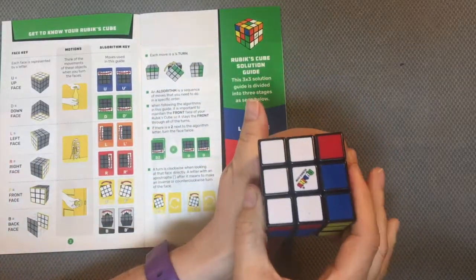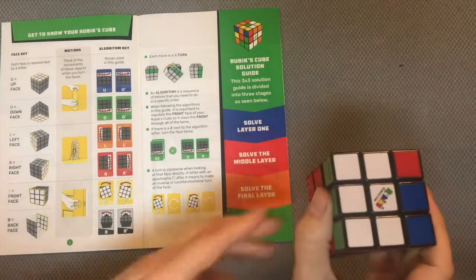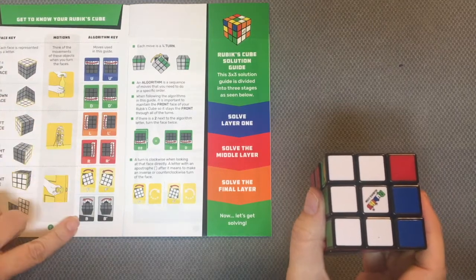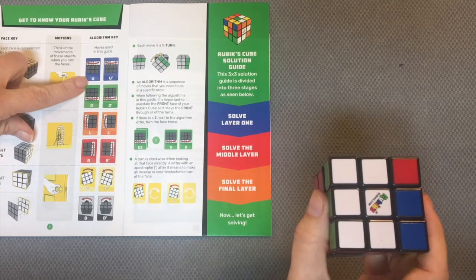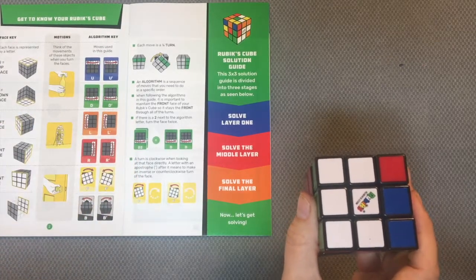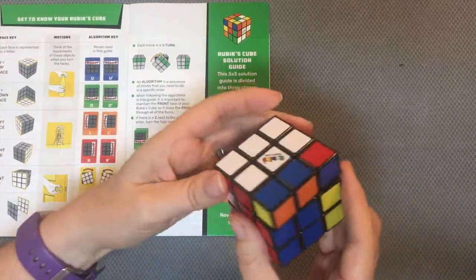When you go through the solution guide, you're going to see an algorithm, which is a series of steps. And the algorithms use this notation here. You can see we've got different colors here. There's a U and a U inverse. That comes from the notion of clockwise and counterclockwise.